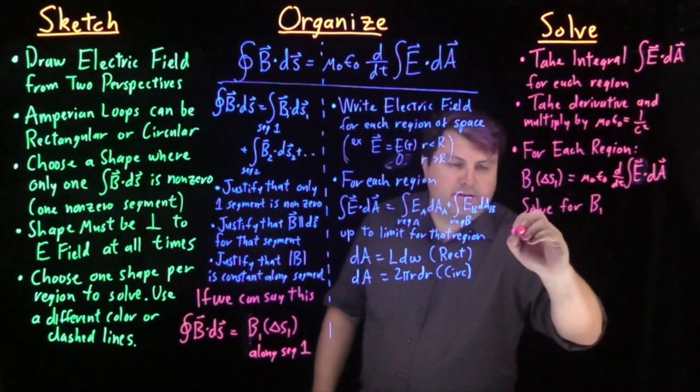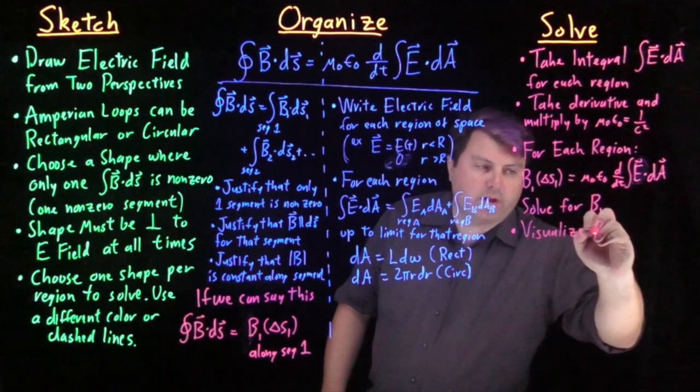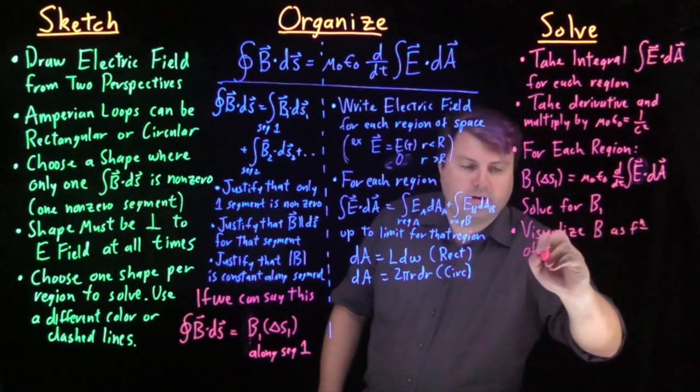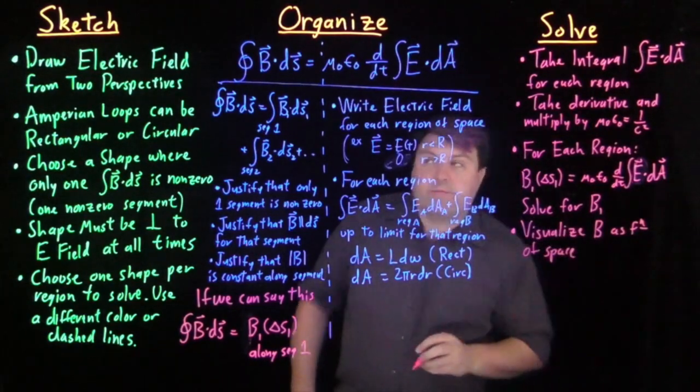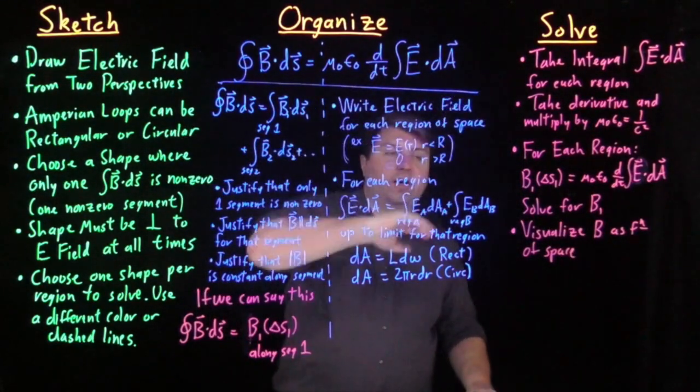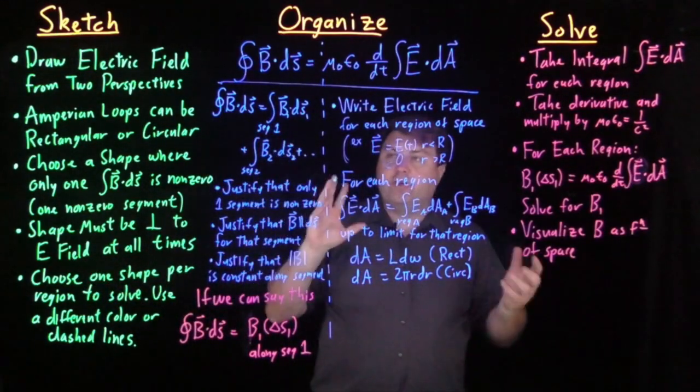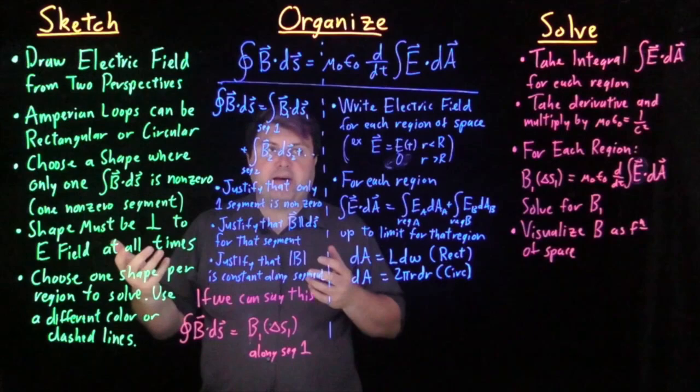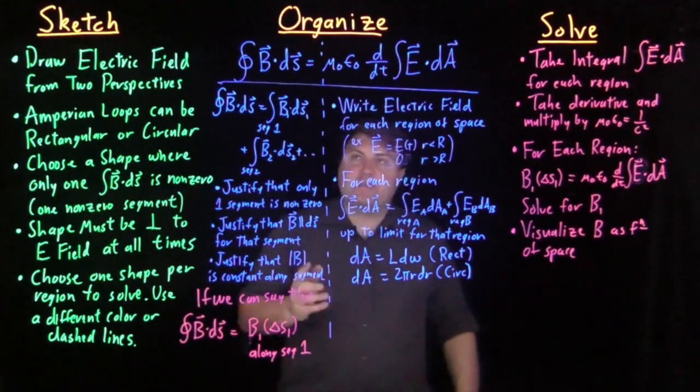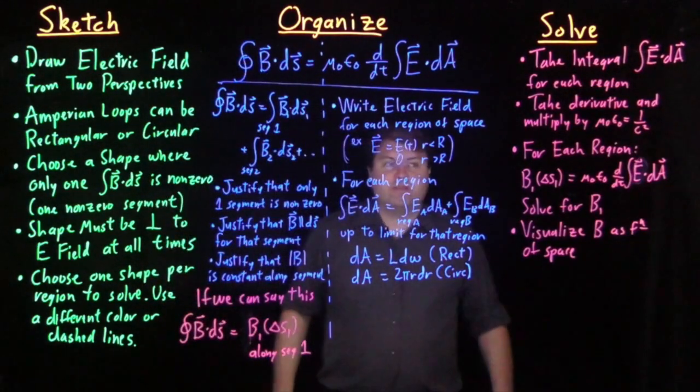What's oftentimes nice is then to then visualize our B as a function of space. So our final sketch, organize, solve, is the last piece of Maxwell's equations and should look very similar for having done other Maxwell's equations since it is a somewhat flip of Faraday's law and also a correction to our Ampere's law, which we've already seen before.